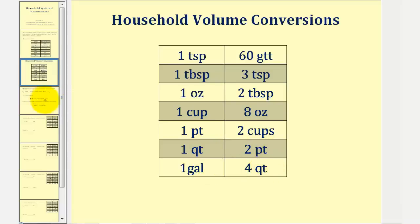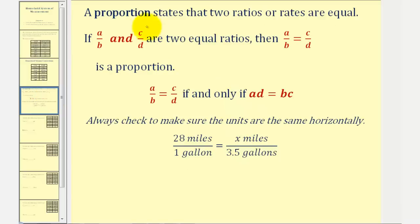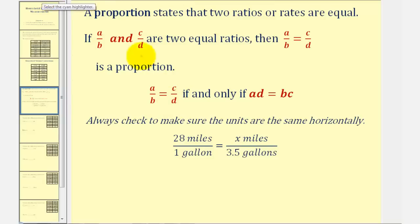In this lesson, to perform the conversions, we'll be using proportions, where a proportion states that two ratios or rates are equal. So if a to b and c to d are two equal ratios, once we set them equal to each other, this is a proportion. What's special about a proportion is that the cross products are always equal, as long as the units of a and c are the same and the units of b and d are the same. So if we have a proportion, then a times d must equal b times c. The reason this helps is because if one of these four values is unknown, we can cross multiply and solve for the unknown.